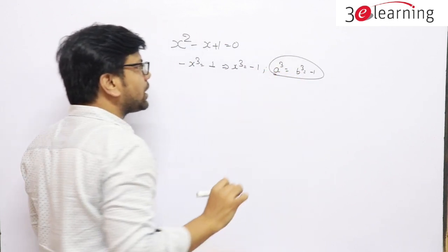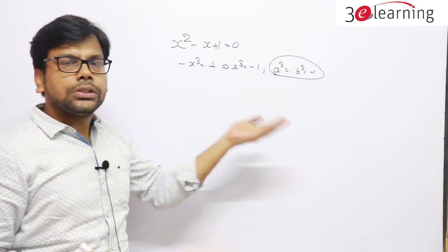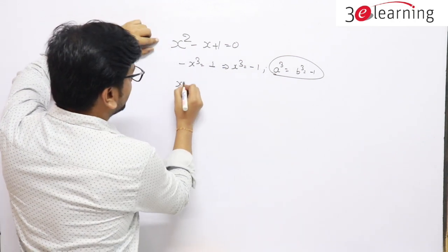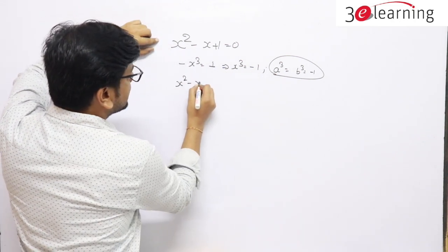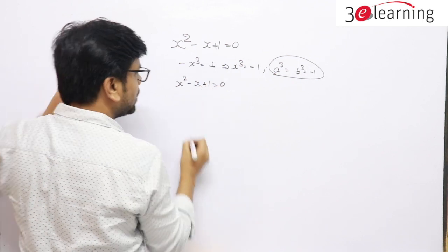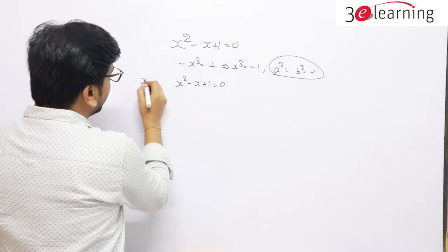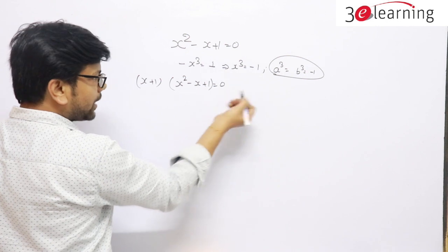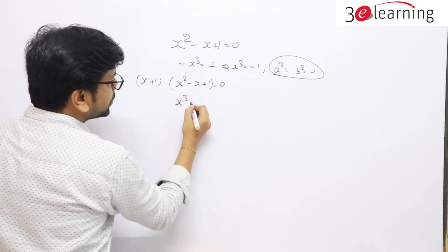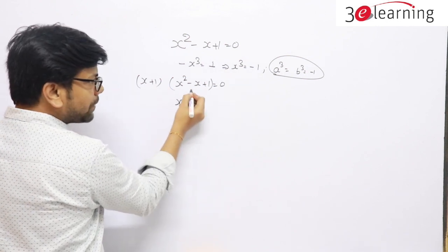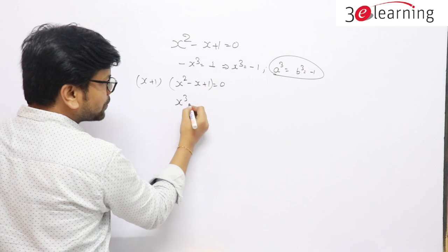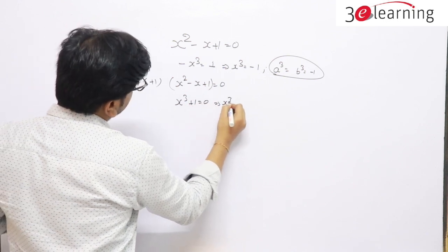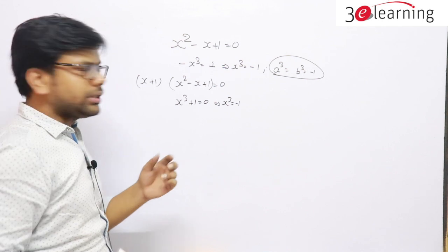This is a very important outcome. Let's see how it comes about. We have x² - x + 1 = 0. I multiply both sides by (x + 1). On the right side, multiplying by (x+1) gives 0. On the left side we get x³ + 1, using the identity (x+1)(x² - x + 1) = x³ + 1, which equals 0. So x³ + 1 = 0.